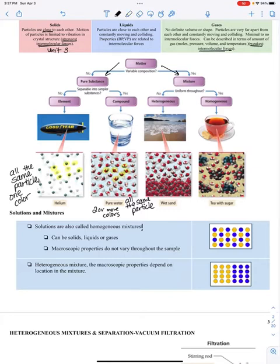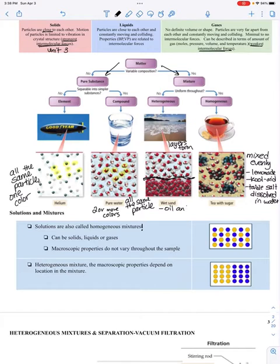And then, of course, when we get over to mixture, we have heterogeneous and homogeneous. Homogeneous is kind of mixed evenly throughout. So, examples of homogeneous mixtures would be like lemonade, Kool-Aid. If I had table salt dissolved in water. And then, heterogeneous mixtures, you could clearly see that there's a layer here. Layers form because the two substances don't mix evenly. So, an example is wet sand, or if you had water and sand. Or other examples would be like oil and water. They do not mix evenly. And if you've ever put oil and water, it kind of just sits on top.